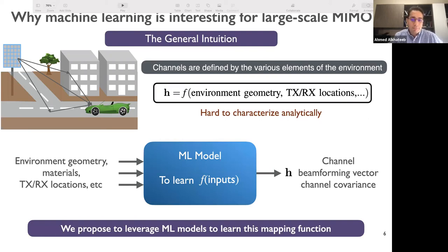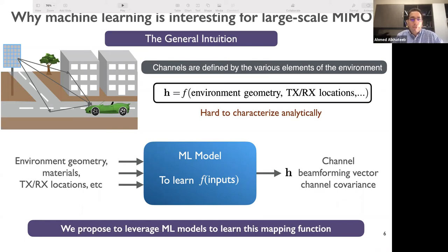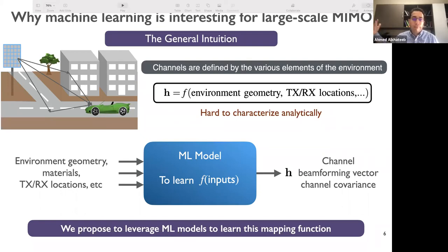How can machine learning help? The general motivation is that if we look at channels, they are defined by various elements of the environment: channel geometry, transmitter-receiver locations, building materials, etc. We can write the channel vector, matrix, or beamforming vector as a function of the different elements of the environment. Machine learning models can help here — we think of a model that takes inputs like environment, geometry, materials, and locations, and predicts the channel, whether that's a vector, matrix, beamforming vector, channel covariance, or some function of the channel.